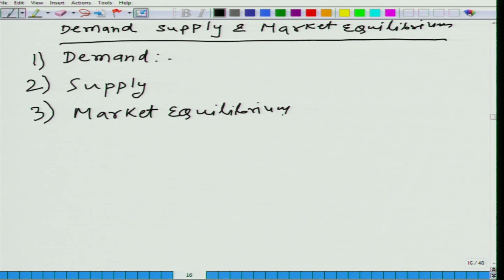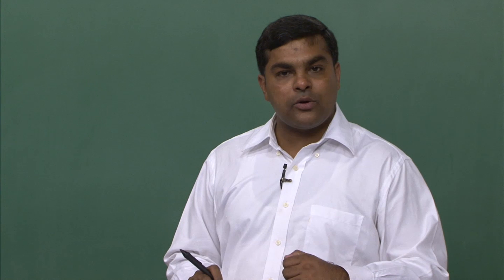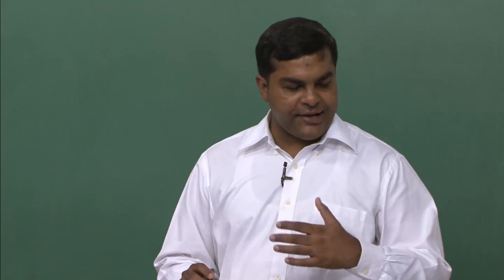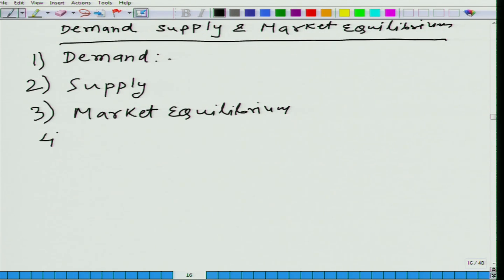What is market equilibrium? A particular price where quantity demanded is equal to quantity supplied. We are going to study all these things in more detail. The fourth topic that we are going to cover is consumer and producer surpluses.